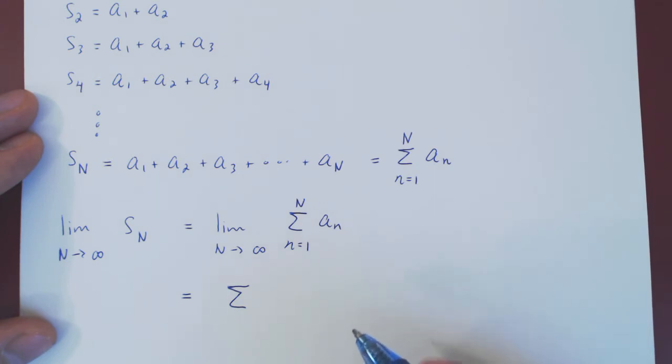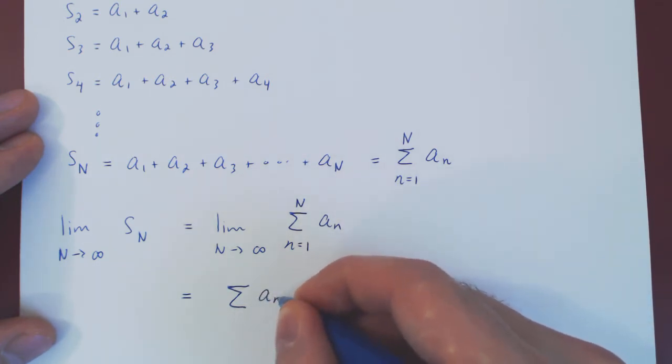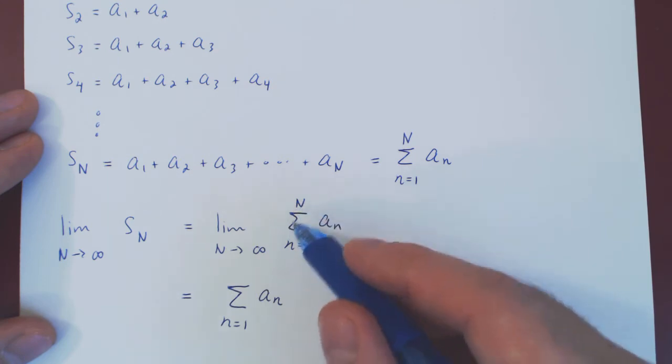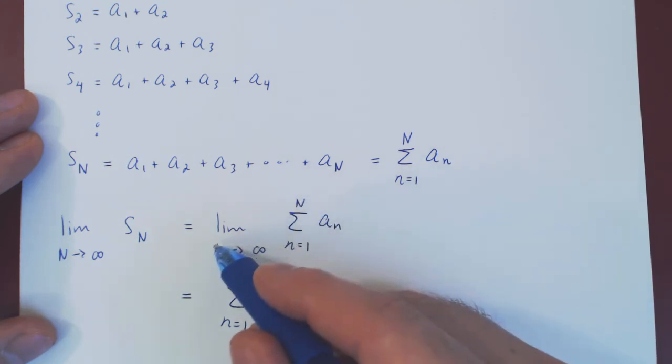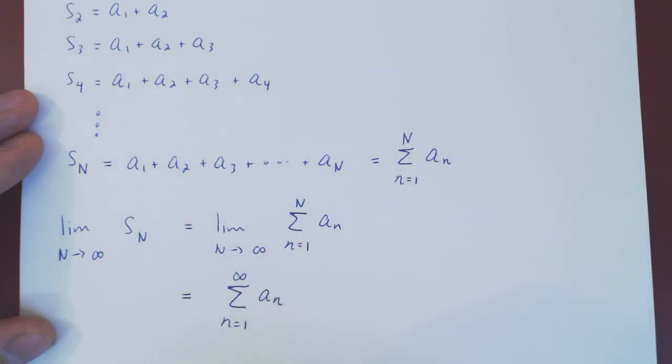As we keep adding more and more and more terms of the sequence, so we can say, well, okay, so we're trying to add the terms of our sequence, beginning with the first, and ending where? Well, we stop at n, but we are letting n tend to infinity, so we can write this in this way.